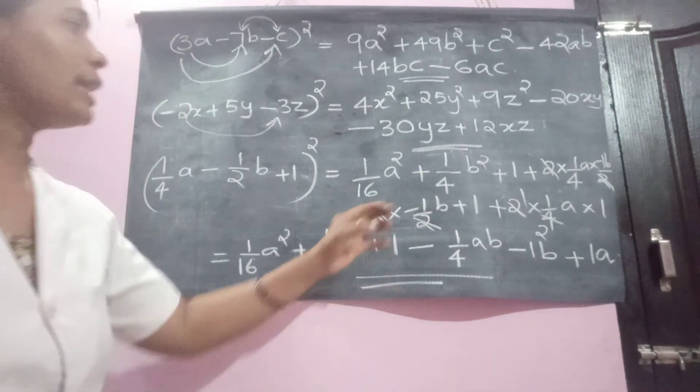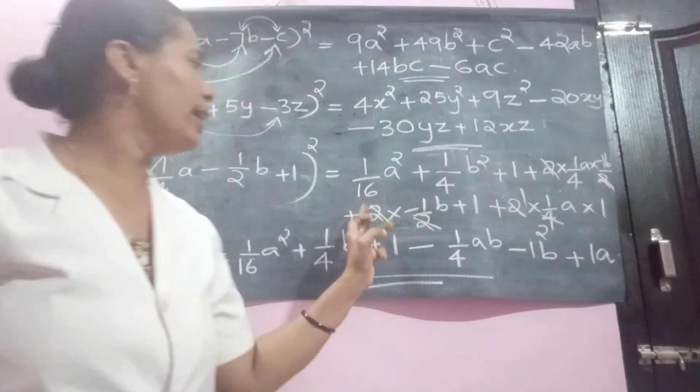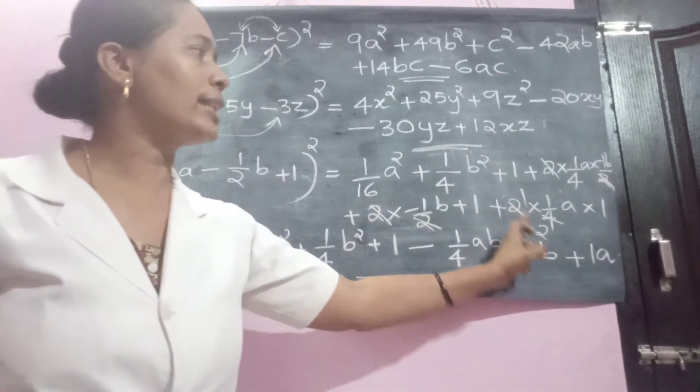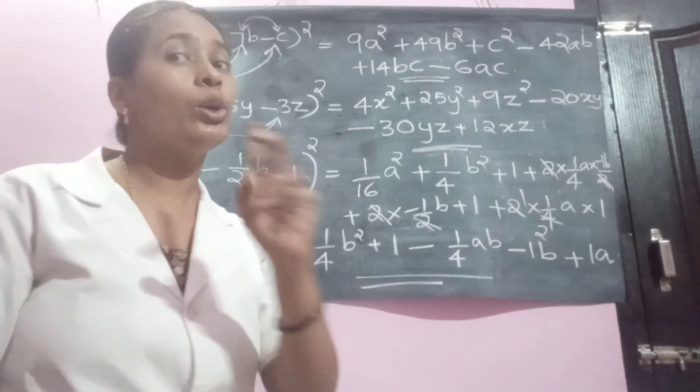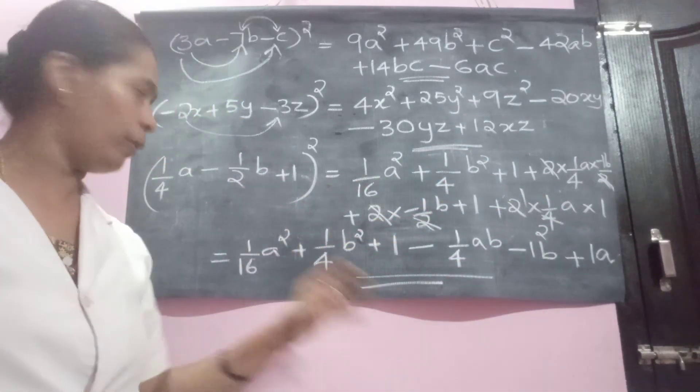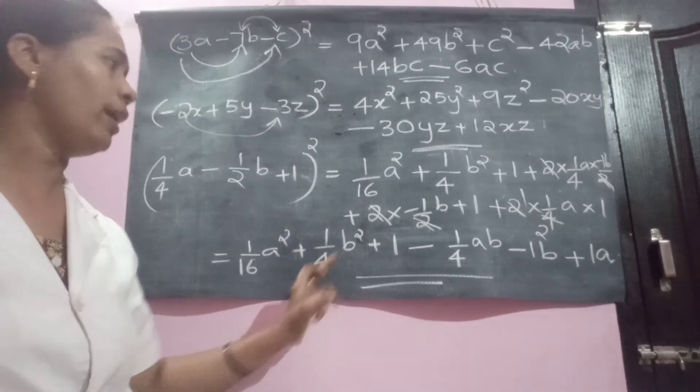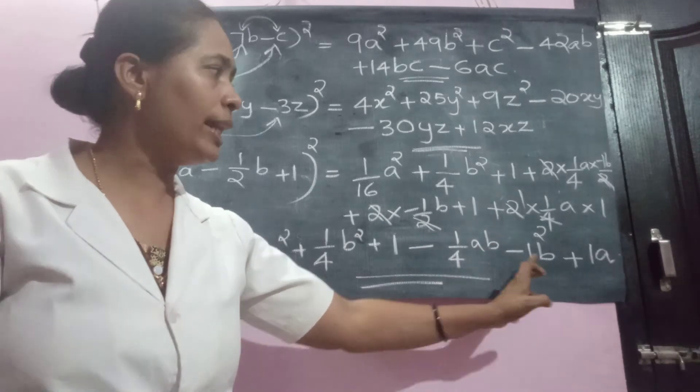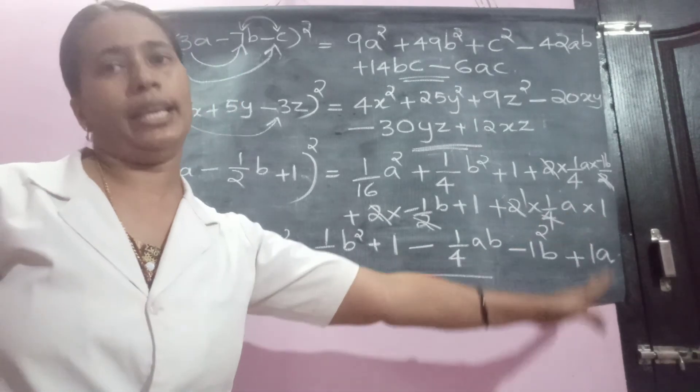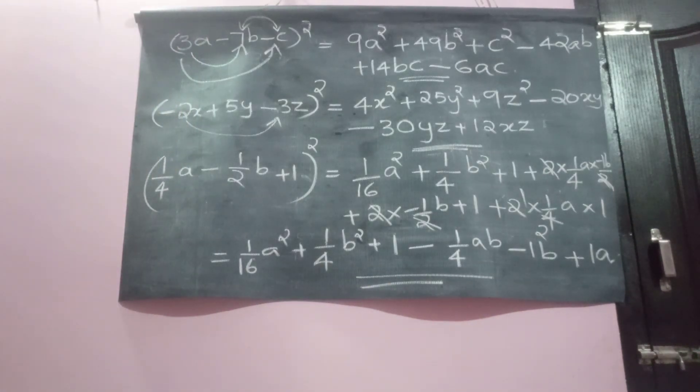Then, some of the terms will get cancelled. Here, 2 and 2 will get cancelled. Here, 2 and 2 will get cancelled. Last also. 2 and 4. 1 time 2. 2 times will get cancelled. Remaining terms you pick it down. 1 by 16A square, 1 by 4B square plus 1 minus 1 by 4AB minus 1B plus 1B. So, complete this. And if there is any question remaining in your textbook, go through the same. Thank you.